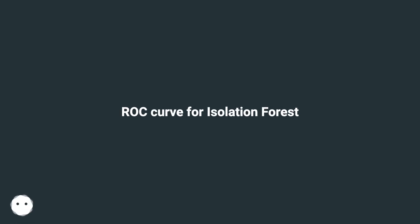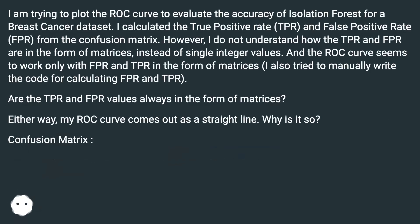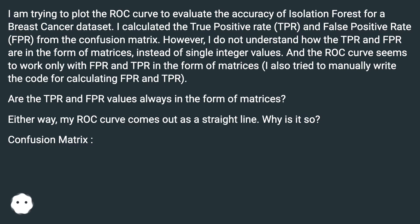ROC curve for Isolation Forest. I am trying to plot the ROC curve to evaluate the accuracy of Isolation Forest for a breast cancer dataset. I calculated the true positive rate and false positive rate from the confusion matrix. However, I do not understand how the TPR and FPR are in the form of matrices instead of single integer values.